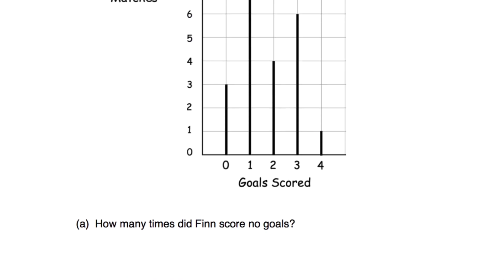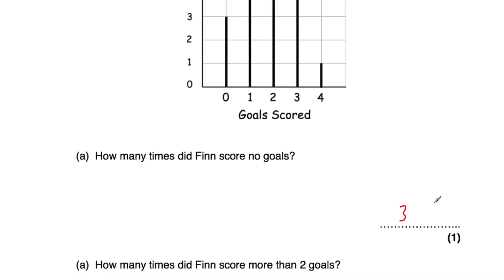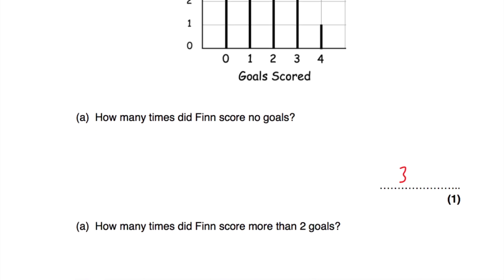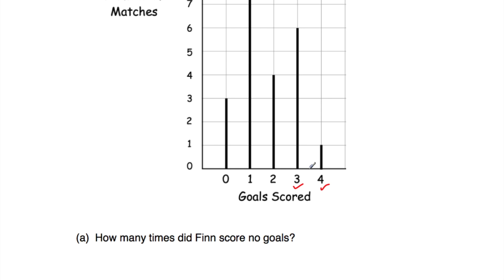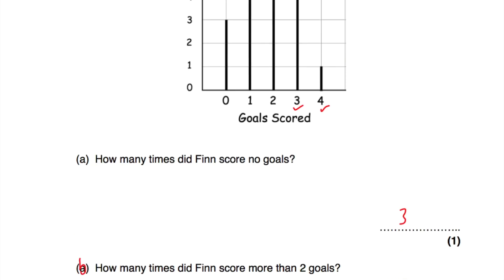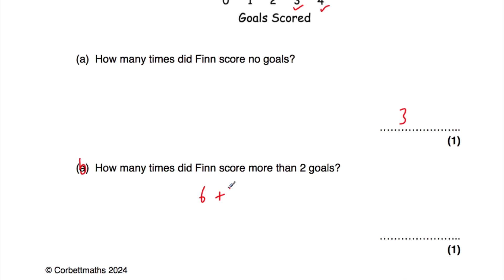Part A says how many times did Finn score no goals? No goals — that would be three matches, so three times. Part B says how many times did Finn score more than two goals? More than two goals would be three goals and four goals. In six matches he scored three goals and in one match he scored four goals, so that's seven matches altogether. Six plus one equals seven.